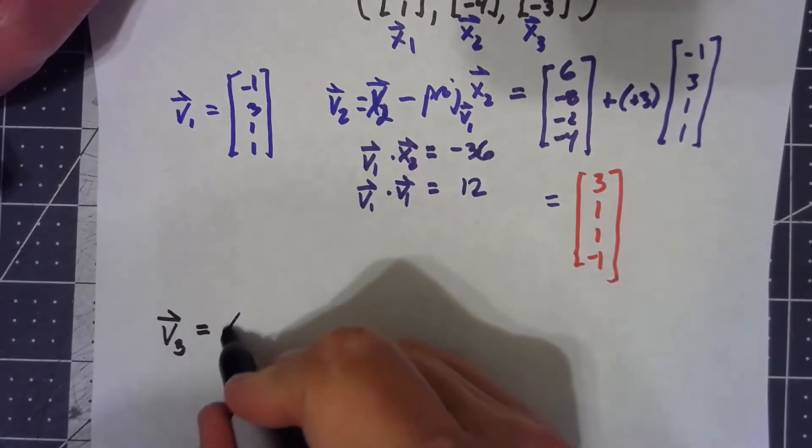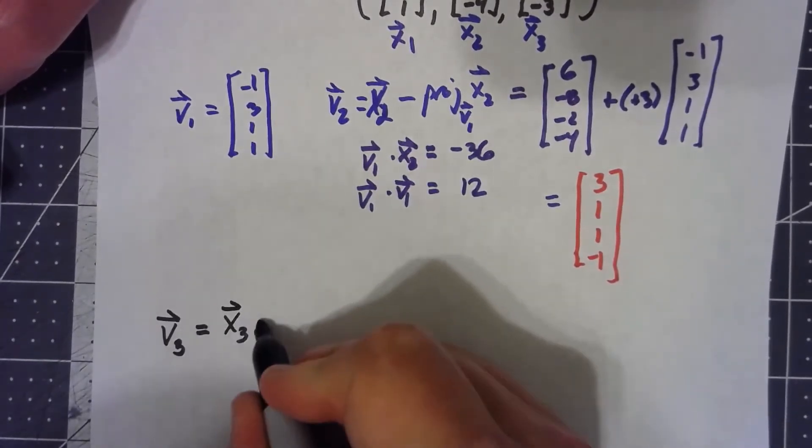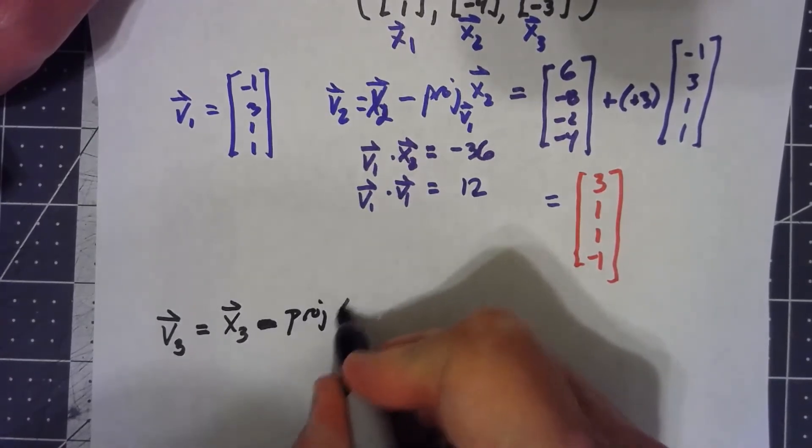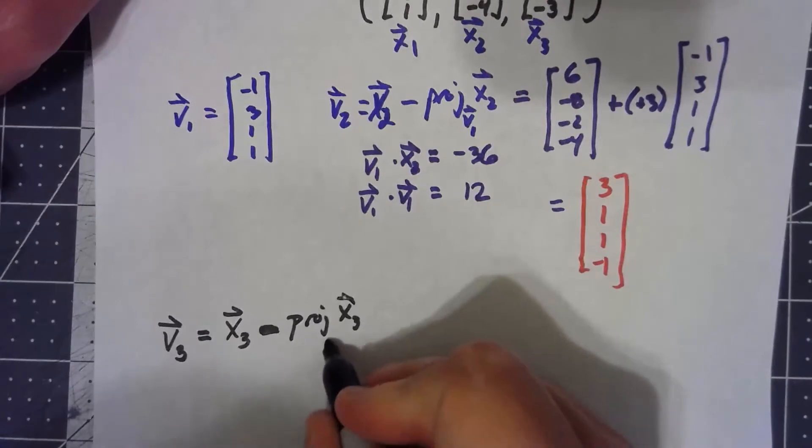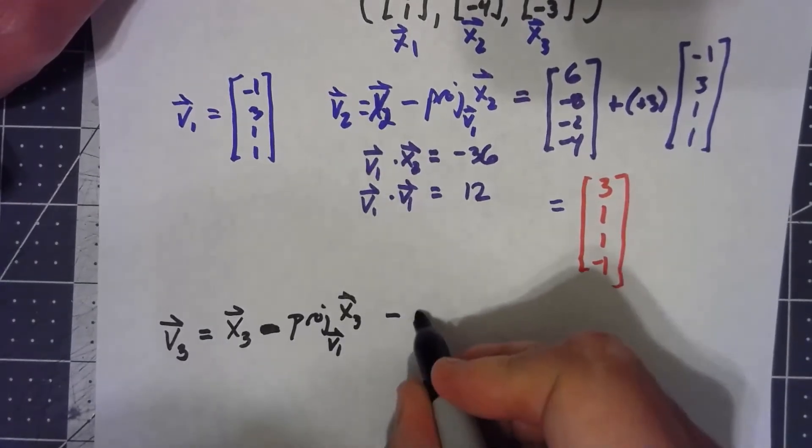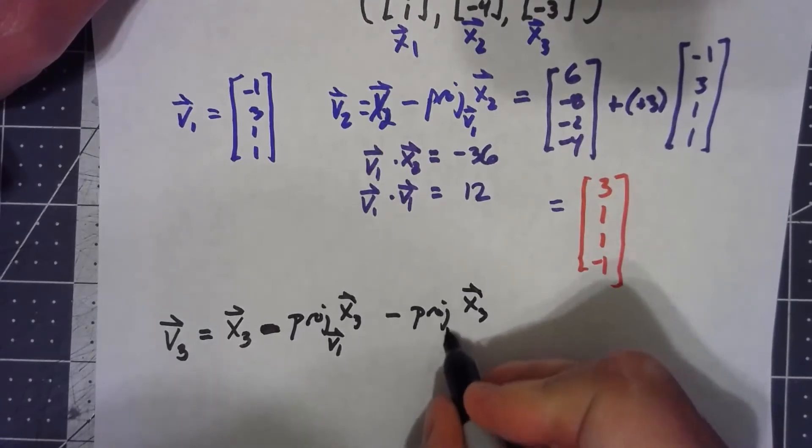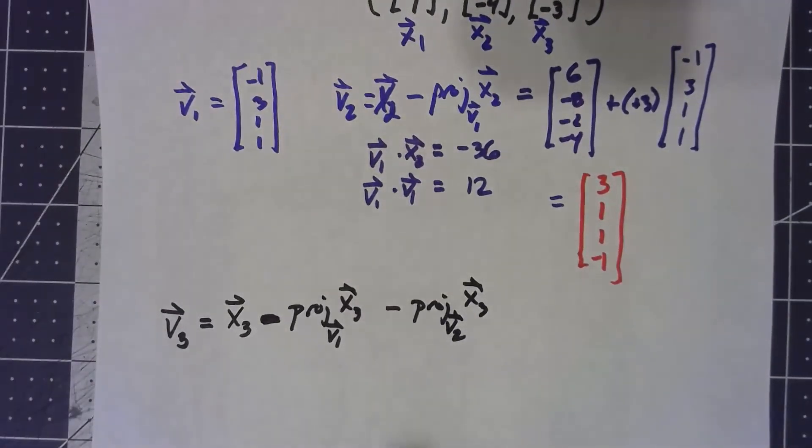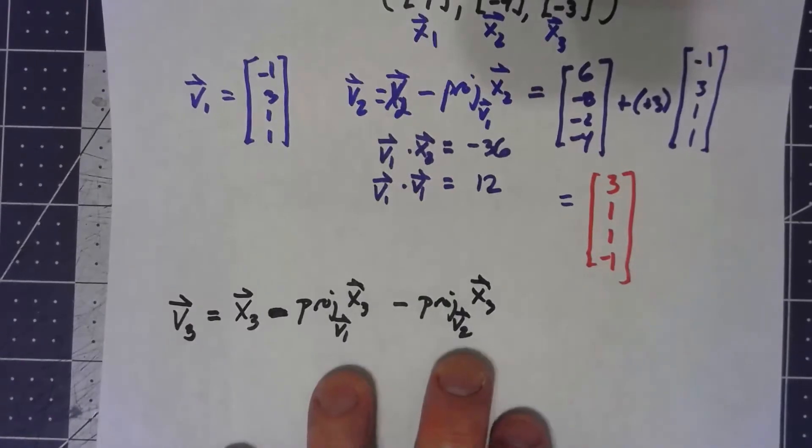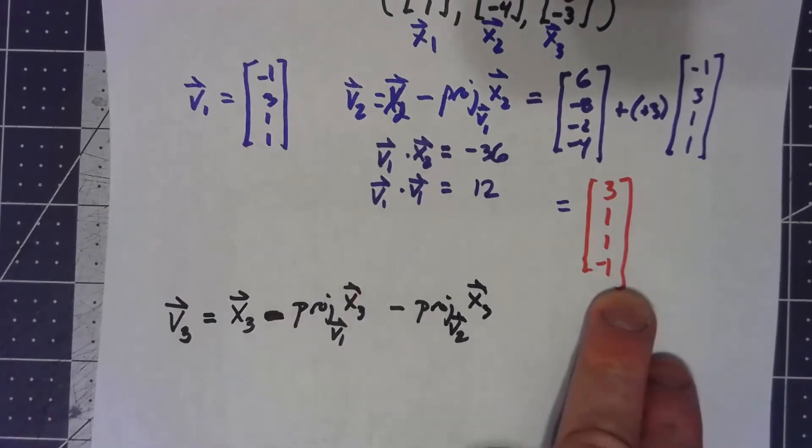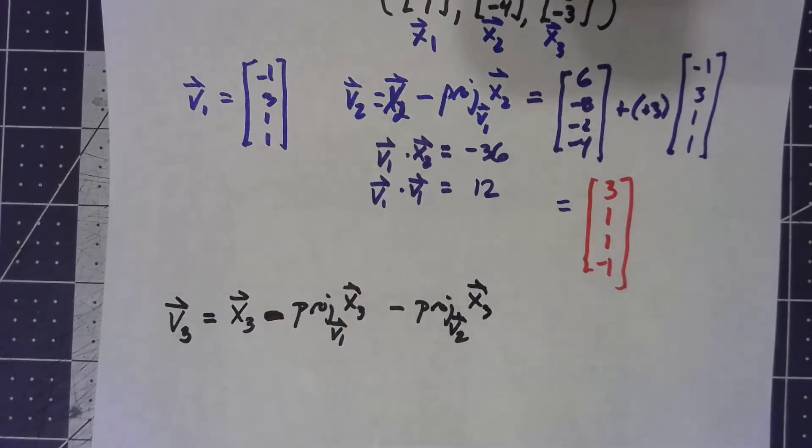I'm going to take my original third x vector minus projecting that vector onto v1, and minus projecting that vector onto v2. Altogether, this is basically saying we're taking the projection of x3 onto the subspace spanned by those two vectors. But the way we do that is just by taking the individual projections.